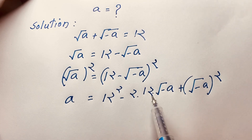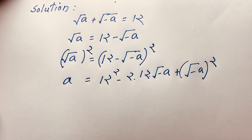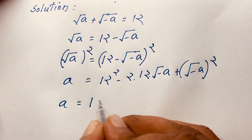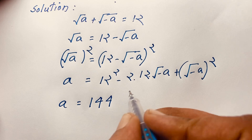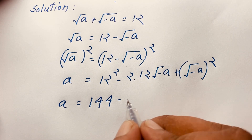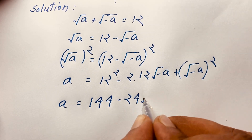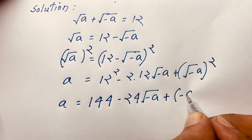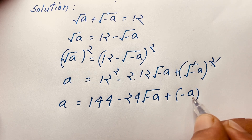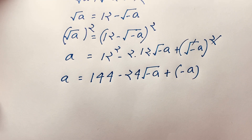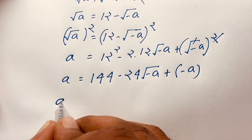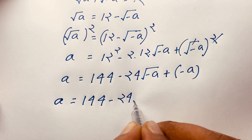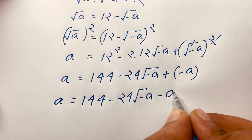Applying A squared minus 2AB plus B squared, you can see easily here: A is equal to 12 squared, which is 144, minus 2 times 12 equals 24, times square root negative A. And in this expression the square root is cancelled, we find negative A. So it will be A equals 144 minus 24 square root negative A plus negative A.